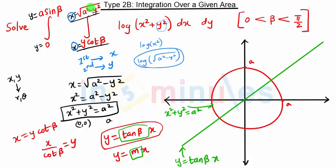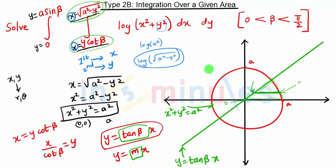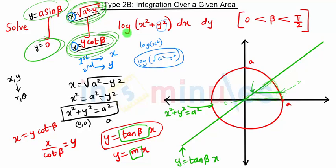These limits represent: integration is first with respect to x, so we consider a strip parallel to the x-axis — though we should have considered a strip parallel to the y-axis. The lower limit is the line y equals tan(beta)·x, or x equals y·cot(beta), and the upper limit is the circle. We integrate x starting from this point on the line to this point on the circle. The region of interest is this bounded region, and since this integration is very difficult, we should convert to polar coordinates.